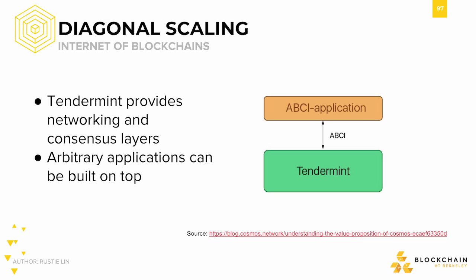The goal of the Tendermint project was to create a fully modular blockchain middleware that provides networking and consensus layers. This allows arbitrary applications to be built on top of Tendermint with the ABCI, or Application Blockchain Interface. An advantage of this modular design is that of flexibility, which lends itself quite naturally to the idea of the Cosmos network.